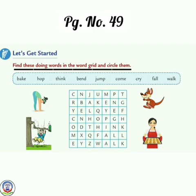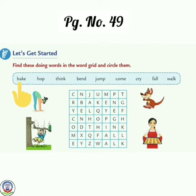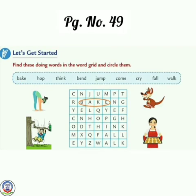But children, remember one thing — jaise hi grid mein ek ek doing word per hum circle lagayenge, vaisi hi upar diye gai box mein se un doing words per tick karenge. Because it will be easy for you to find other doing words. First one is 'bake.' Let's see where is the word bake. Bake is over here. So we have to circle it and tick over here.